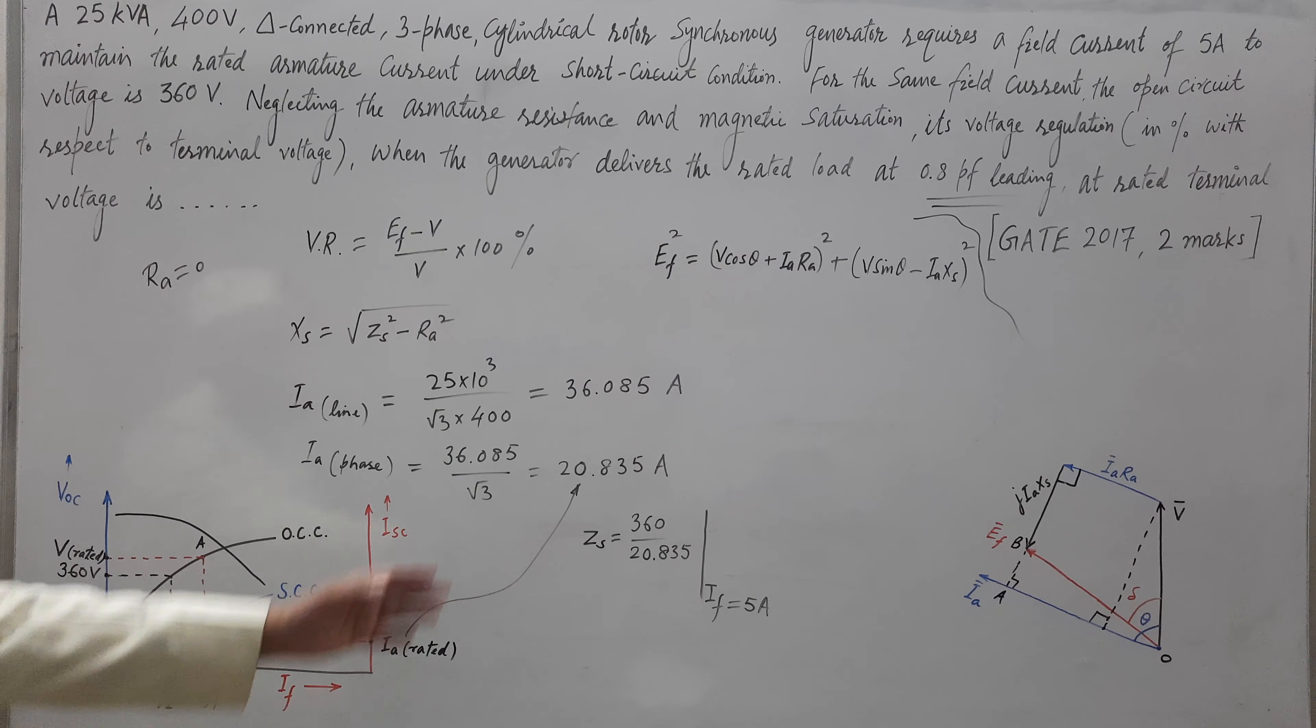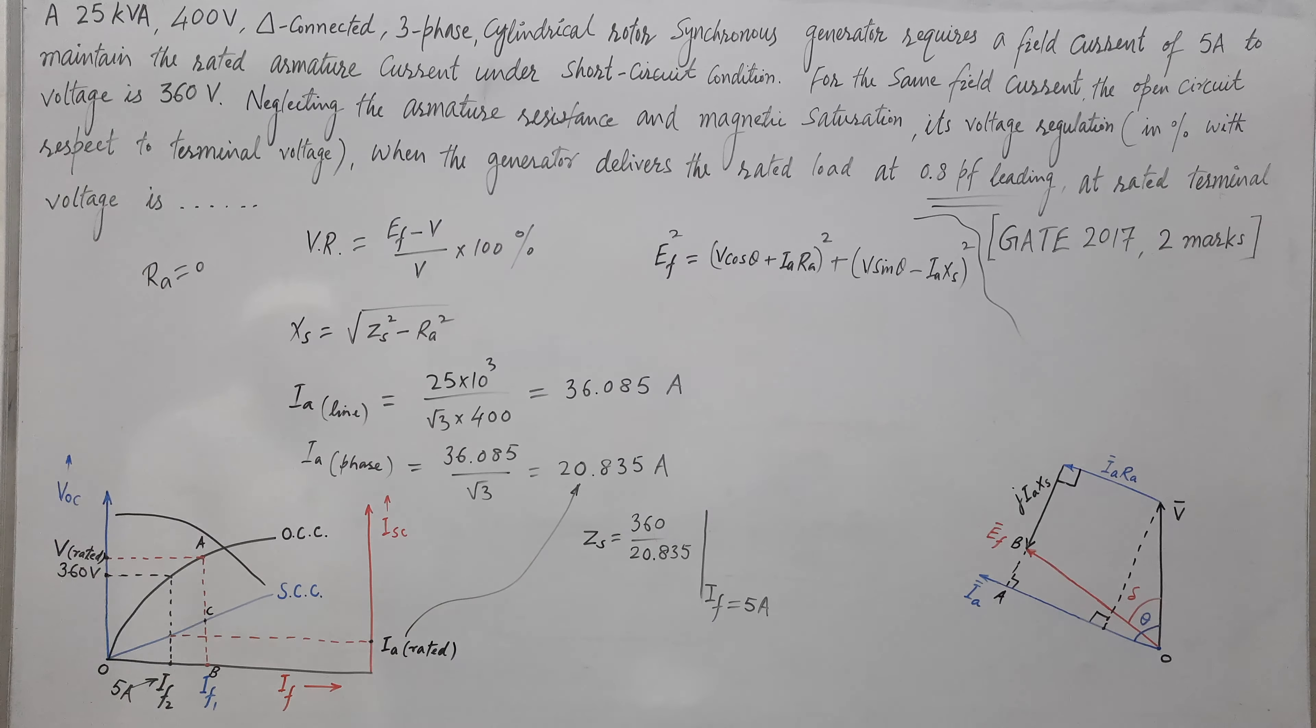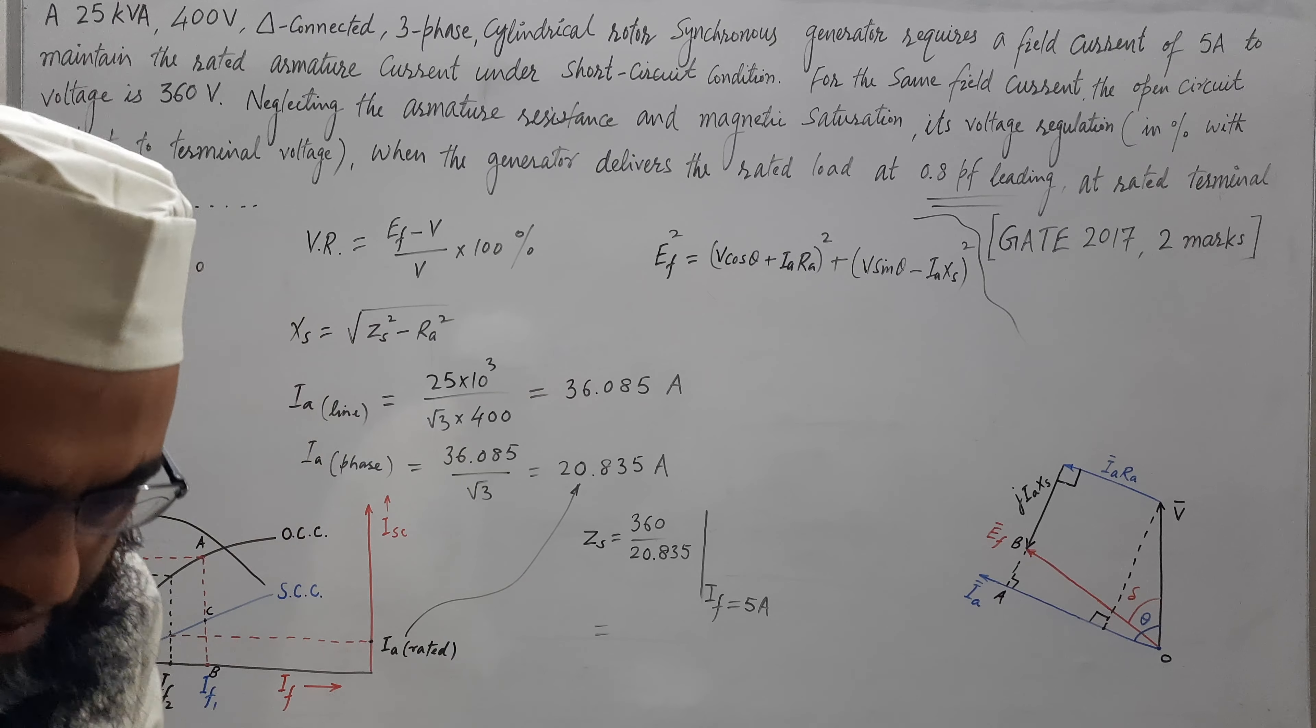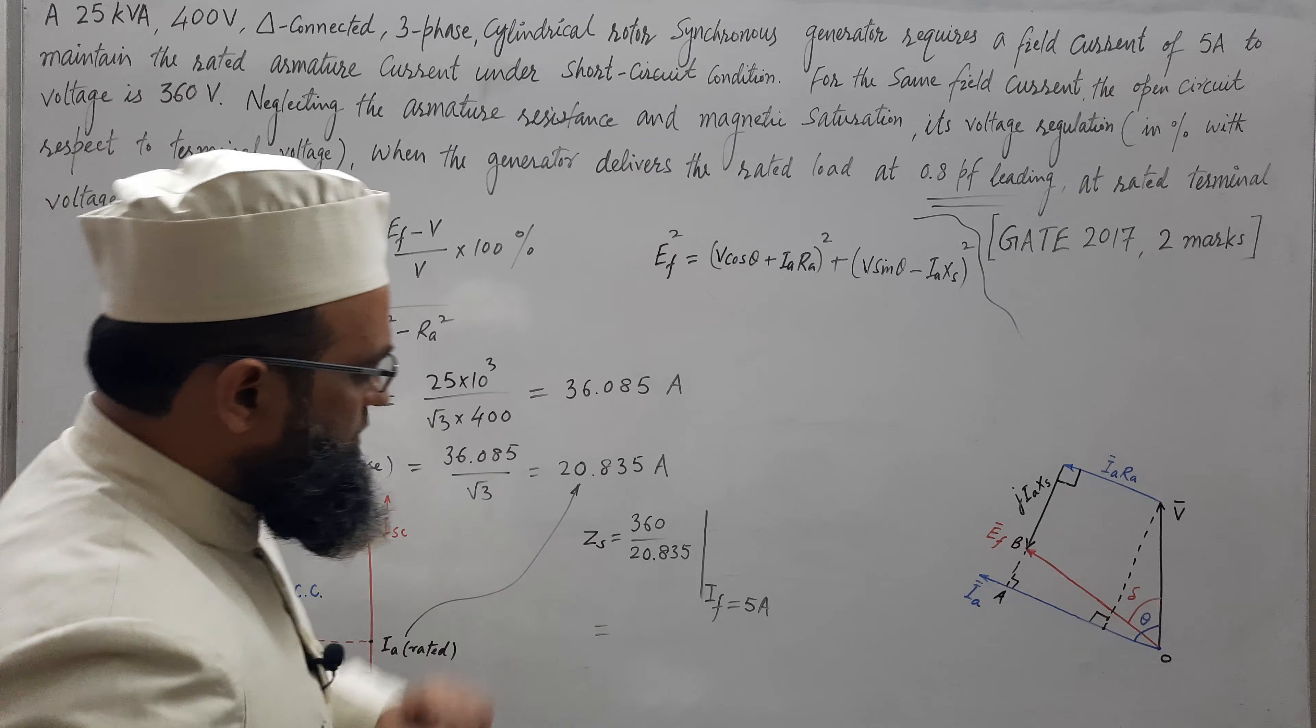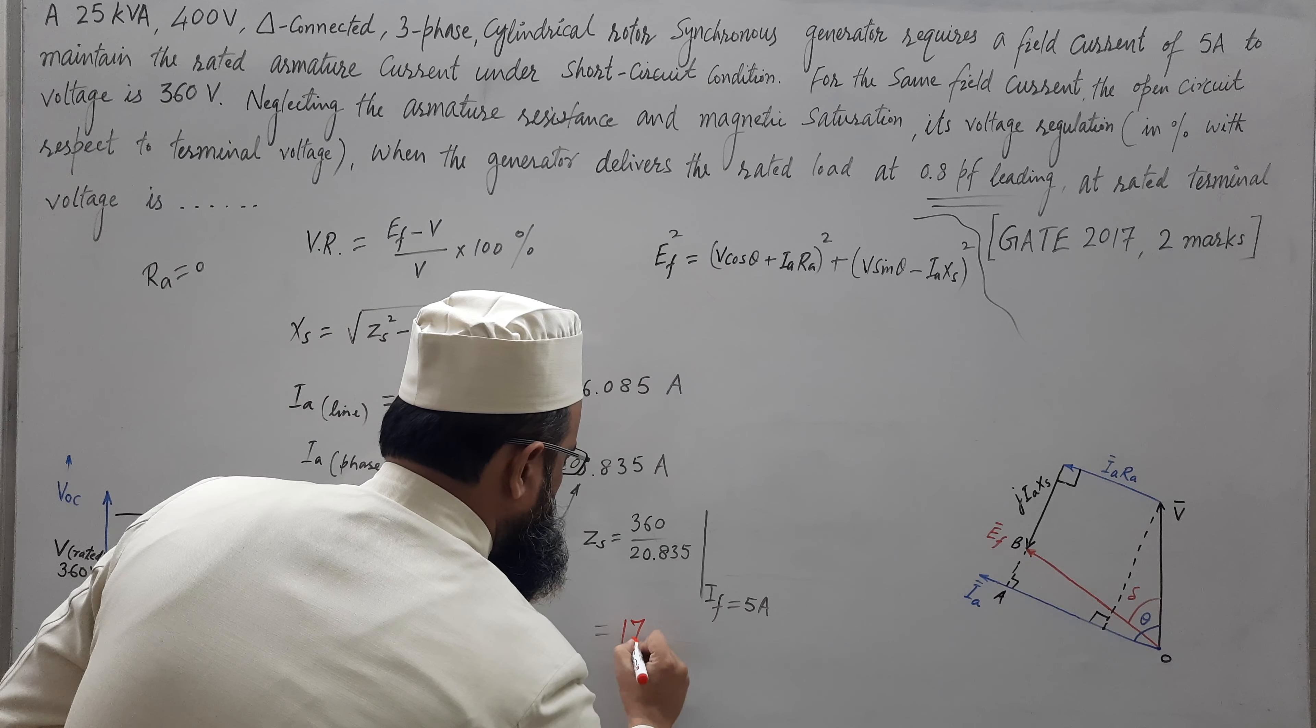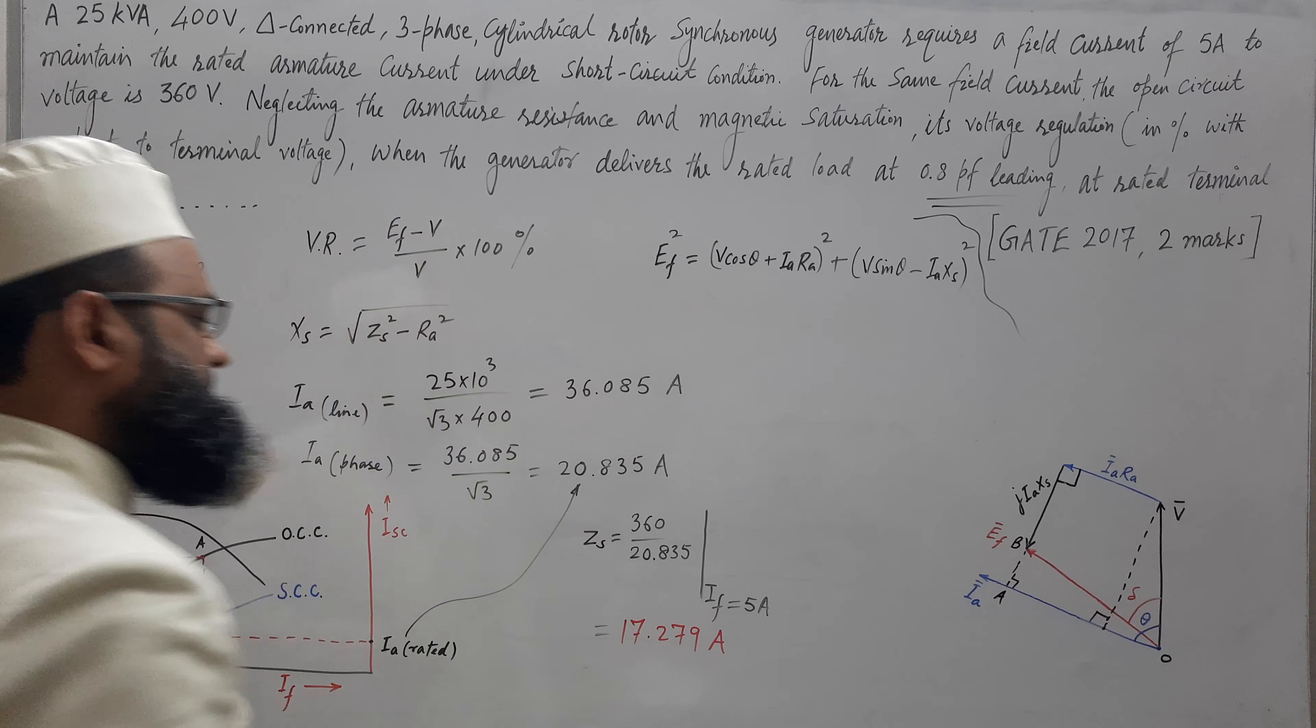From the definition of ZS, we know that at the same field current, open circuit voltage upon short circuit current. So, this is coming out to be 360 upon 20.835 and this is coming out to be 17.279 ohm.